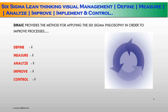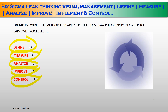DMAIC provides a method for applying Six Sigma philosophy in order to improve a process. First is define — the business opportunities. Second, measure — the process current state. Number 3, analyze — determine root causes or Y=f(x) functions. Number 4, improve — eliminate waste and variations. Number 5, control — evidence of sustained results. Those are the 5 segments we will discuss over the next couple of months.